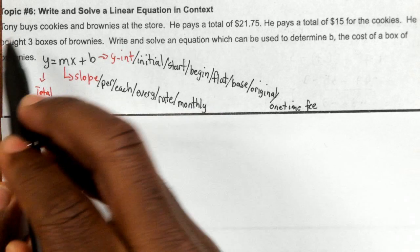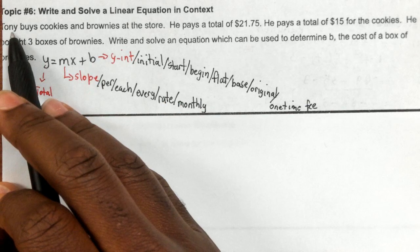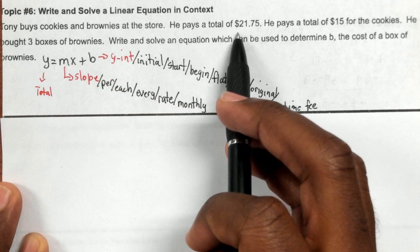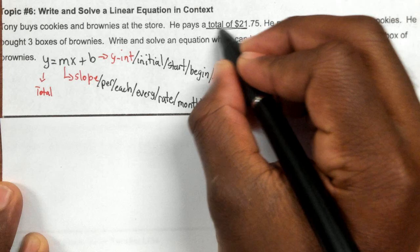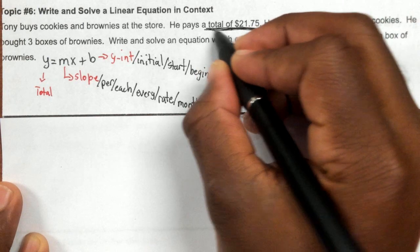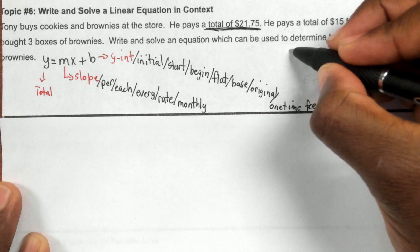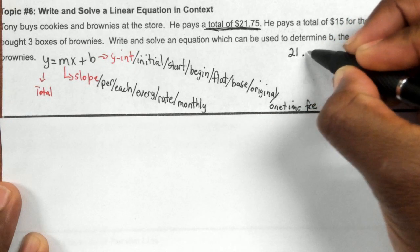We're going to firstly try to identify my total. So the question says Tony buys cookies and brownies. He pays a total of $21.75. Your total is always your largest number, so because this is your largest number, that would be my total.